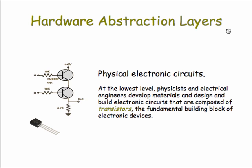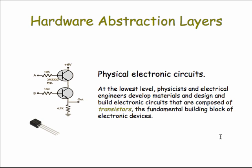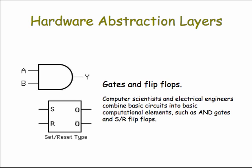At the lowest abstraction layer are the physical electronic circuits. These are composed of transistors, the fundamental building blocks of all electronic devices. Transistors and the other materials, such as the silicon chips the circuits are printed on, are designed by physicists and electrical engineers. But all electronic devices contain circuits and transistors.